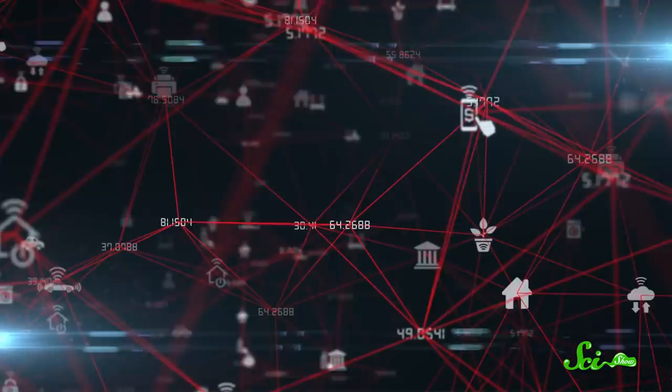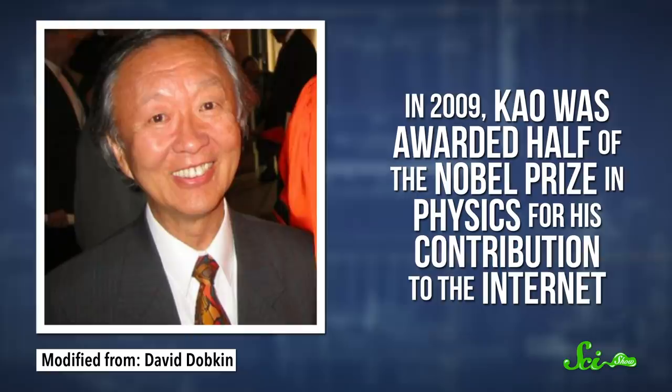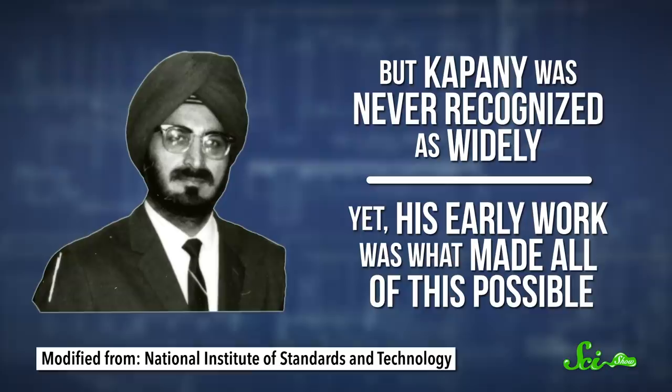And today, cables like this run around the world, some of them thousands of kilometers long. In 2009, Gow was awarded half of the Nobel Prize in Physics for his contribution to the internet, but Capani was never recognized as widely. And yet, his early work was what made all of this possible. By figuring out how to send light ricocheting down glass tubes, Capani showed us how to bend light, which laid the foundations for the information age.